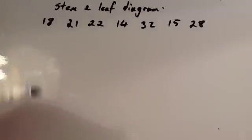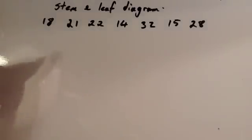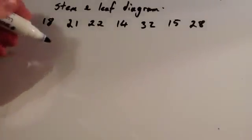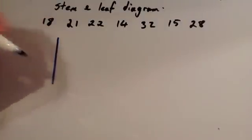And we're going to draw a stem and leaf diagram, and it's quite useful to draw a stem and leaf diagram as it's another way of representing the data. So, to draw a stem and leaf diagram, the first thing you need to do is to draw your stem. So you draw your stem, it's a vertical line.